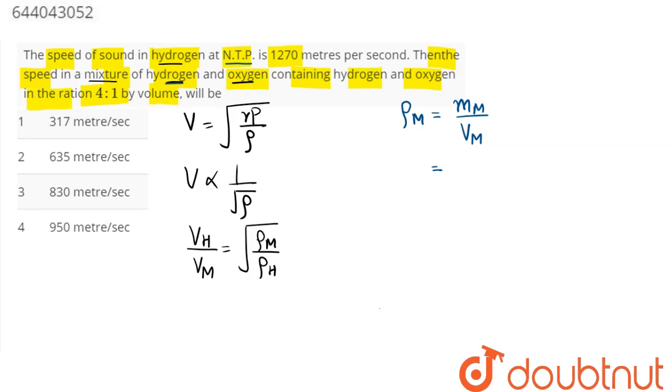So we can say here if volume of oxygen is v, then volume of hydrogen will be 4v. Therefore we can say here total volume will be 4v plus v, which is 5v.